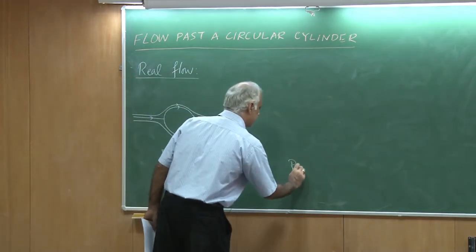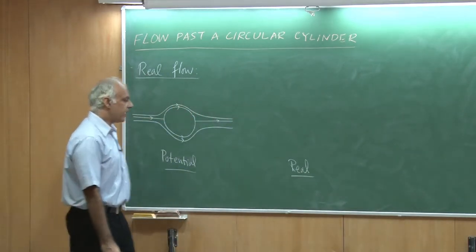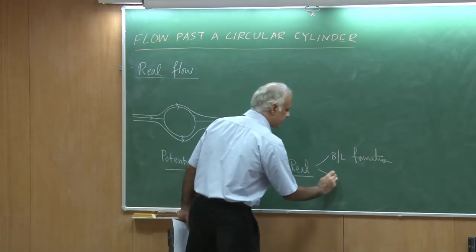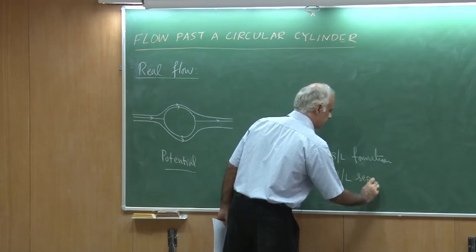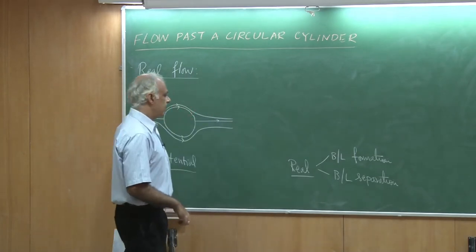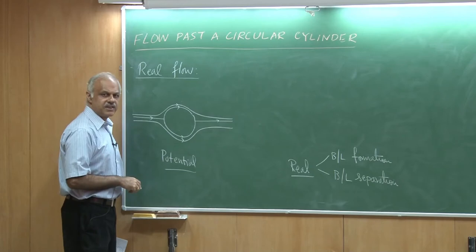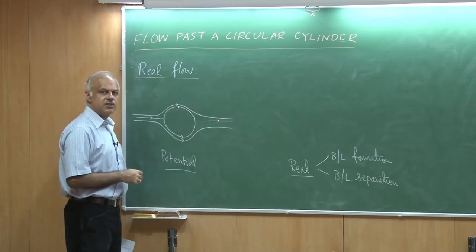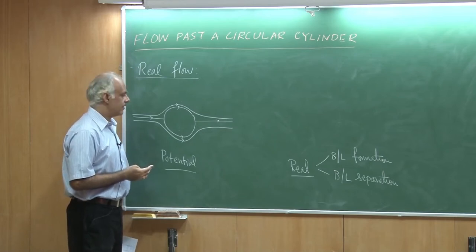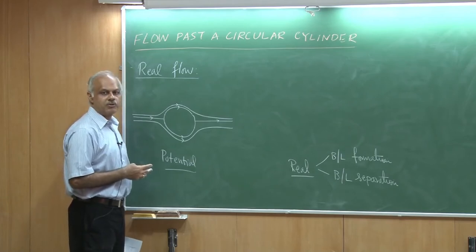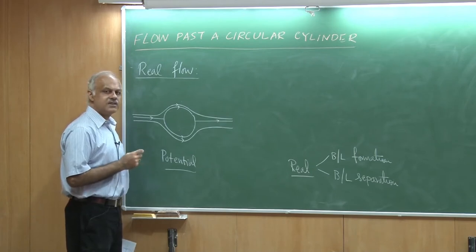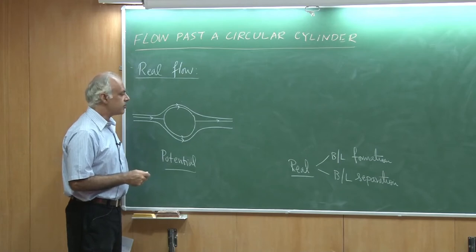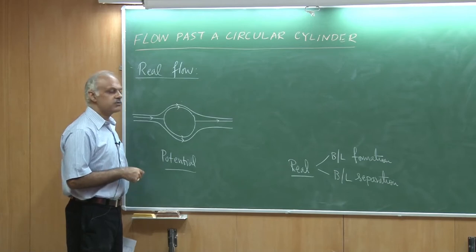What would happen in a real flow are two things: one is boundary layer formation and the other is boundary layer separation. Close to the body, the viscous effects are important. From the potential flow solution, the maximum speed on the surface of the cylinder is twice the speed of the free stream. But real flows respect the no-slip boundary condition, so the speed at the surface would be zero and then rapidly increase normal to the wall — that is what leads to a boundary layer.